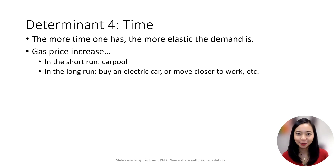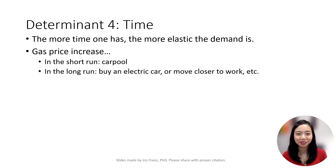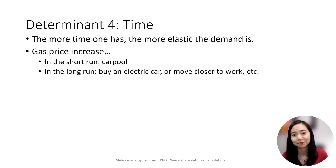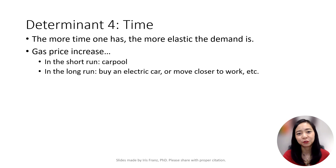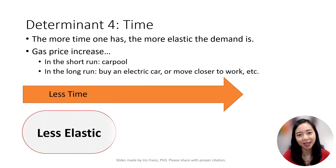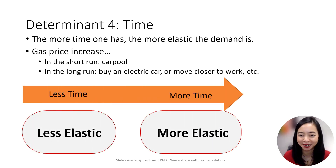Our last determinant is time. The longer the timeframe, the more price elastic our demand becomes. For example, if the price of gasoline increases, then in the short run you cannot easily adjust your quantity demanded for gasoline — you still need to drive to school or to work, and at most you can carpool. However, in the long run, you can purchase an EV, or move somewhere close to work, or move into the dormitory for school. Therefore, the more time we have, the more price elastic our demand becomes.